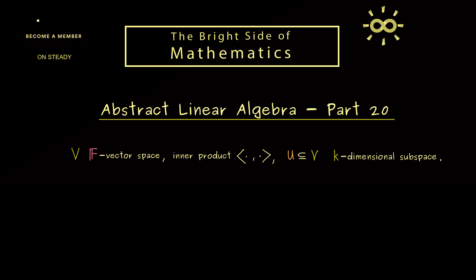Okay, then let's immediately start. And you might remember, our setup is that we have a general F-vector space V with an inner product and a subspace U. And here we will just talk about the subspace because we want to work in finite dimensions. Simply because we want to talk about a basis with finitely many elements. In particular, if we have a k-dimensional subspace, we only need k vectors.